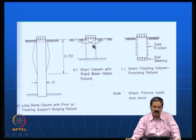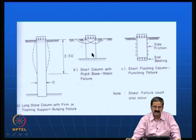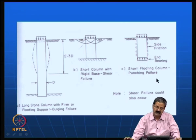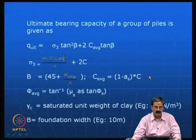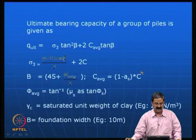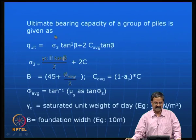Suppose the depth is less — there is a possibility it could fail like a simple classical soil mechanics type of failure called a shear failure. The third failure possibility is side friction and end bearing. We should understand these failure mechanisms properly so that the columns will not have these problems. There is another expression for ultimate bearing capacity of a group of granular piles — Q_ultimate is given in terms of lateral stress times tan² beta plus 2C times tan phi_B, where beta equals 45 plus phi_average/2.